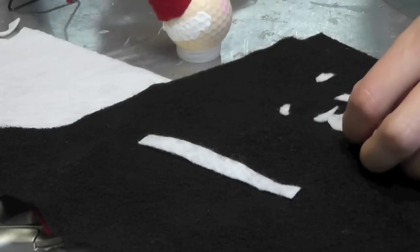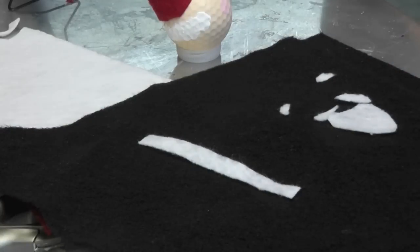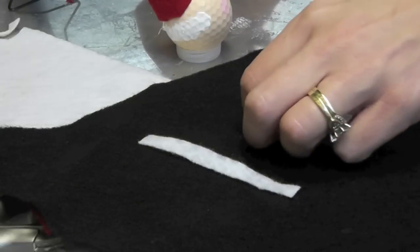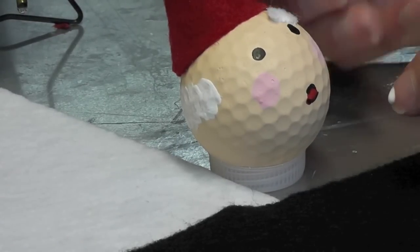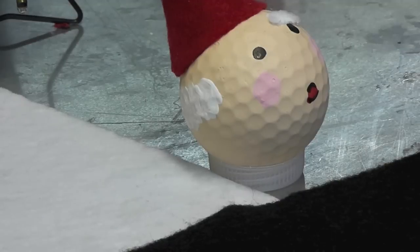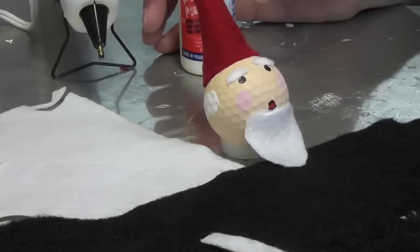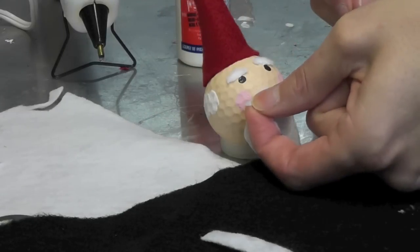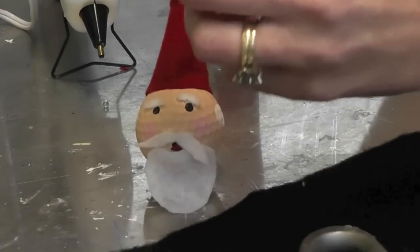So I'm just going to start adhering those and I think I'm going to use some tacky glue for that just because it'll be a little bit easier to work with. I'm going to put an eyebrow on and I'll do the other eyebrow, and I'll put the beard on and then I'll do the mustache.